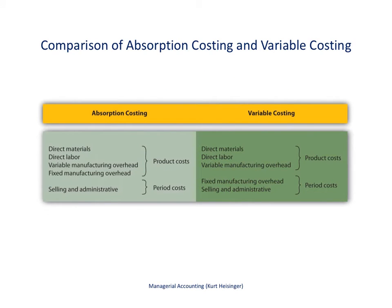This chart summarizes the difference between absorption costing and variable costing. The only real difference is with fixed manufacturing costs — how that fixed manufacturing overhead is handled. With absorption costing, fixed manufacturing costs are considered to be product costs. With variable costing, the fixed manufacturing costs are period costs.